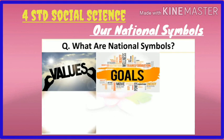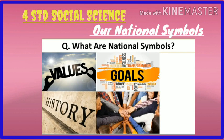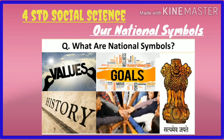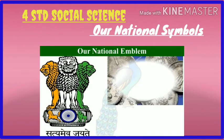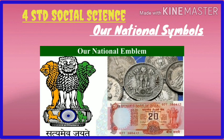Our national symbols represent a country. Every country has its own national symbols. Children, where do we see our national symbols? These are observed in places and objects like government offices, documents, stamps, currency notes and coins.